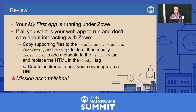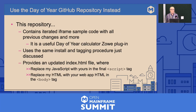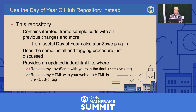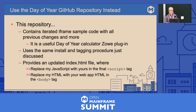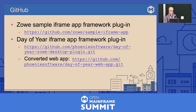You could use my day-of-the-year GitHub repository instead of the sample provided by Zoe. It contains an iterated iframe sample code with all the previous changes and more. My little calculator might also be useful — it uses the same install and tagging procedure just discussed, and provides an updated index.html where you can replace my JavaScript with yours in the final script tag and replace my HTML with your web app HTML in the body tag. It includes a readme about installing, which I found lacking in all the other samples.